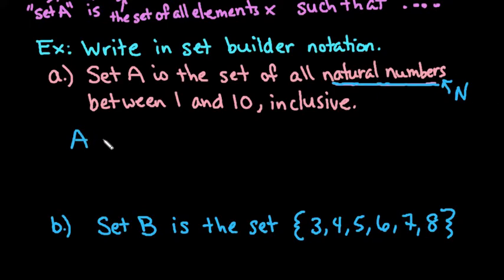So we would say A is the set of elements X. X just represents any value that fits this criteria. You could use other values here - like in algebra we'll often use Y if we're talking about the Y axis - but the default is X if you don't have any other stipulations.